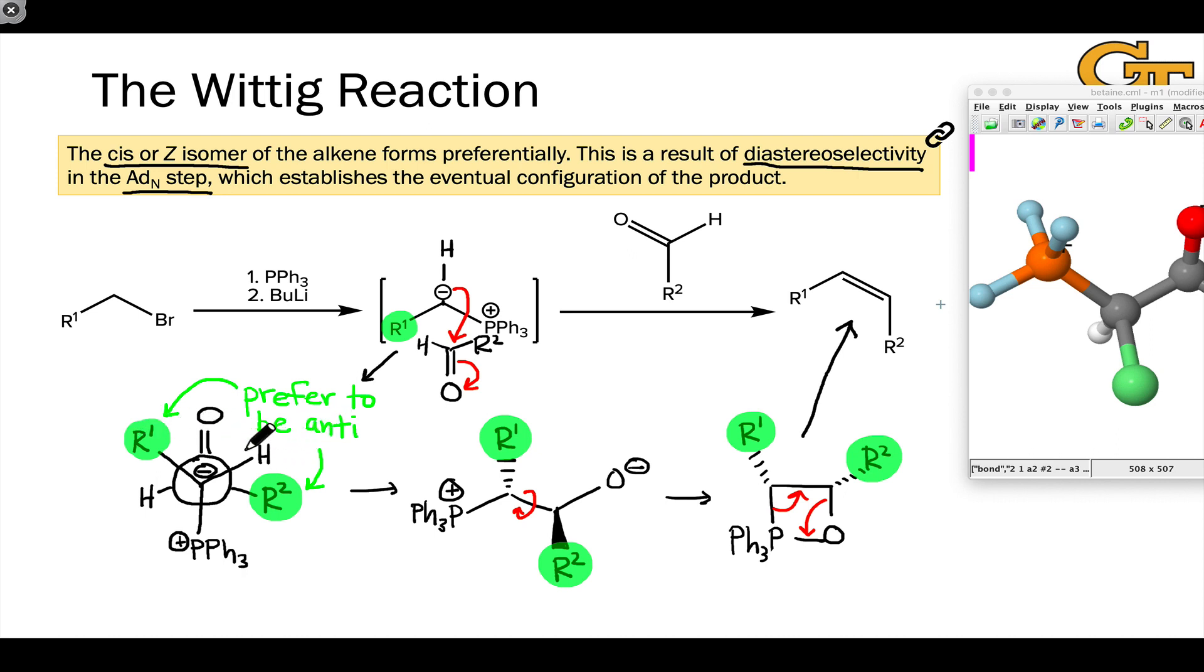And that's relatively unstable because of steric interactions between R1 and R2. In this anti-transition state that avoids those steric interactions, we eventually get around to the cis alkene, thanks to this 180 degree bond rotation that happens before phosphorus and oxygen are linked together.